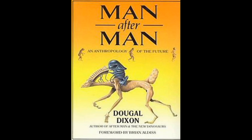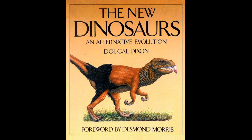Dixon also wrote Man After Man, which explores the ways humans might adapt to different settings, and The New Dinosaurs, which postulates how non-avian dinosaurs may have evolved into modern times had they not gone extinct 66 million years ago.